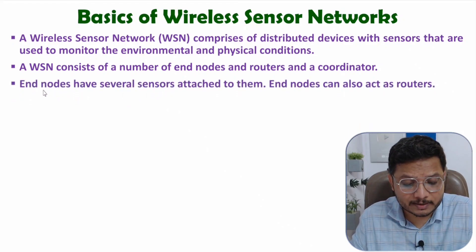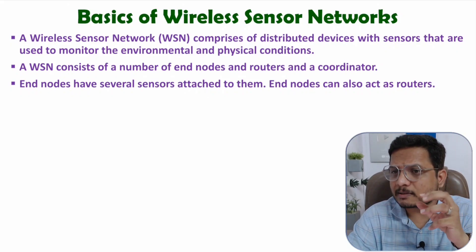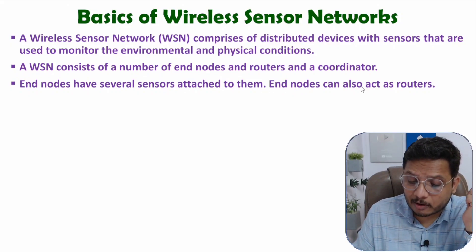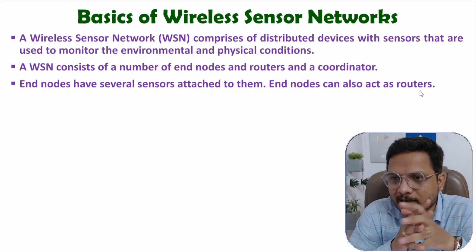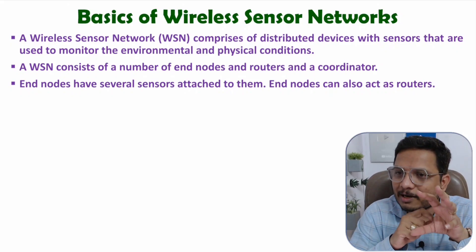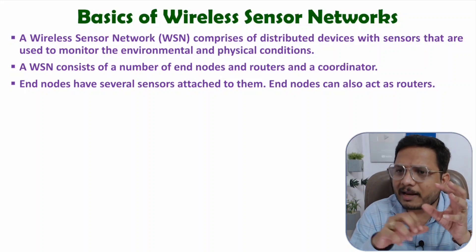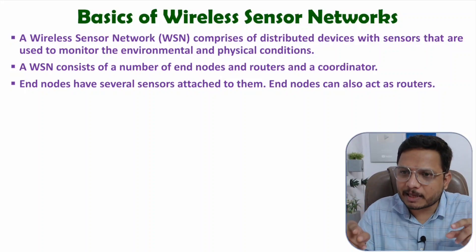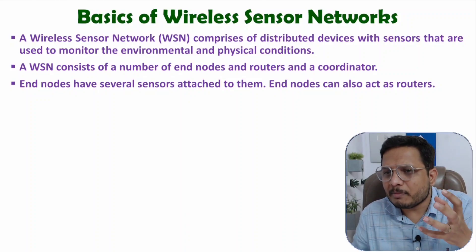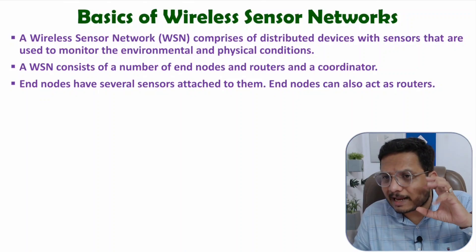End nodes have several sensors attached — a single end node can be interfaced with multiple sensors which will be measuring multiple physical quantities. Each end node can also act as a router, so it is not compulsory that you will have to interface a separate router. As we are having an embedded system, an end node can also be a router, but that end node should be powerful. Usually in low-end applications, we use a dedicated router where end nodes are not acting like a router. But if you have a small size application, like a single room, then you may use a single end node as a router.